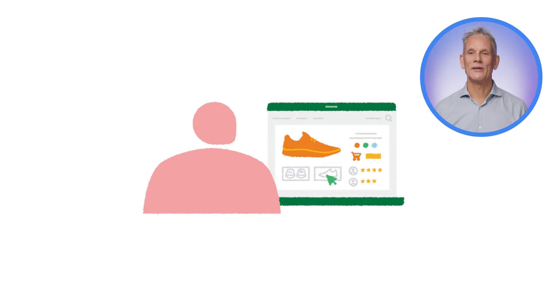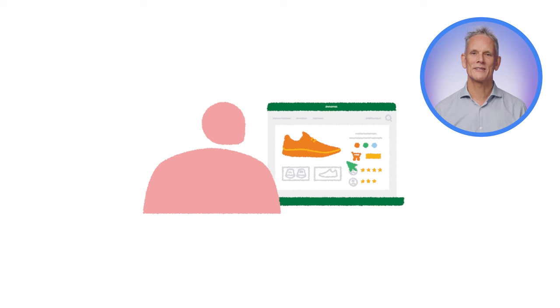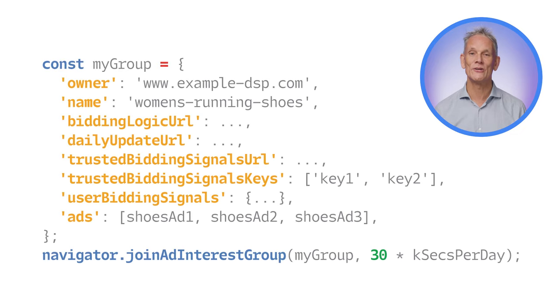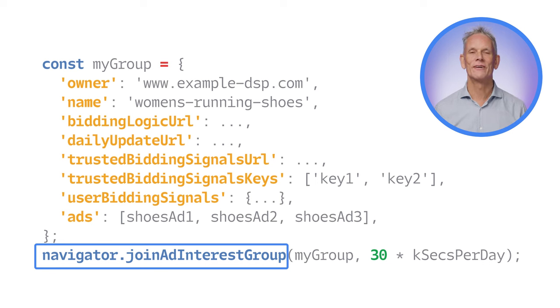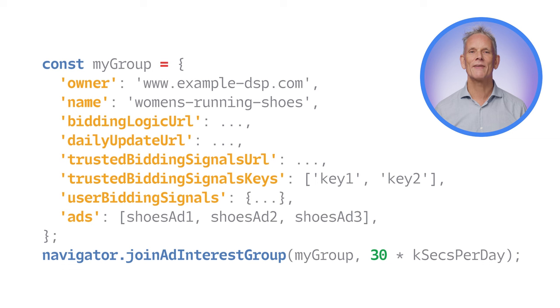So how exactly does the Protected Audience API work? Let's see an example from start to finish. I'll show you some JavaScript here, but don't worry if you're not a coder — you should still be able to follow along. A user visits a page on a site that wants to advertise its products, like the online shoe store. The advertiser site, or the ad tech it uses to participate in an ad auction on their behalf — such as a demand side platform — asks the user's browser to join an ad interest group by calling joinAdInterestGroup. When adding a user to an interest group, the advertiser specifies the ad associated with the interest group and the location of the bidding logic to be executed when the ad auction runs later.